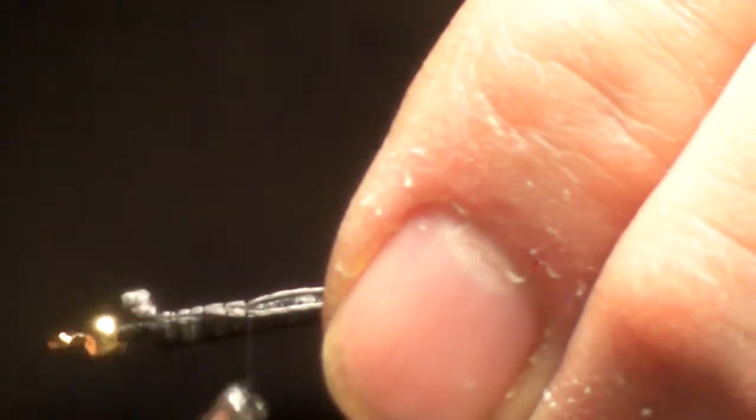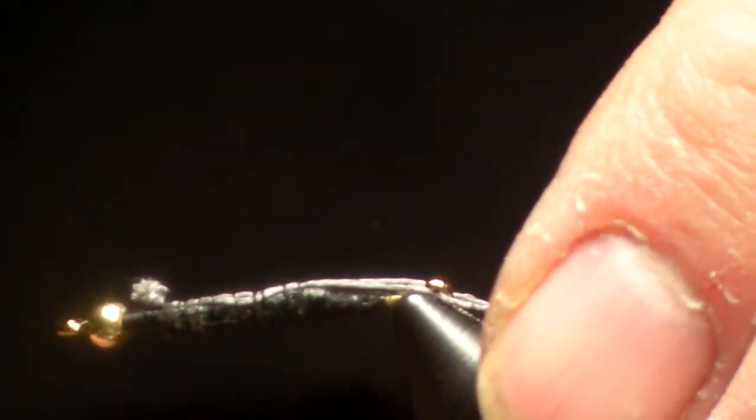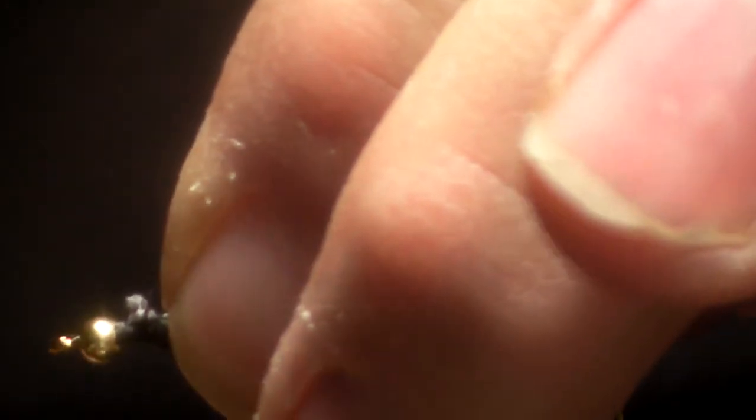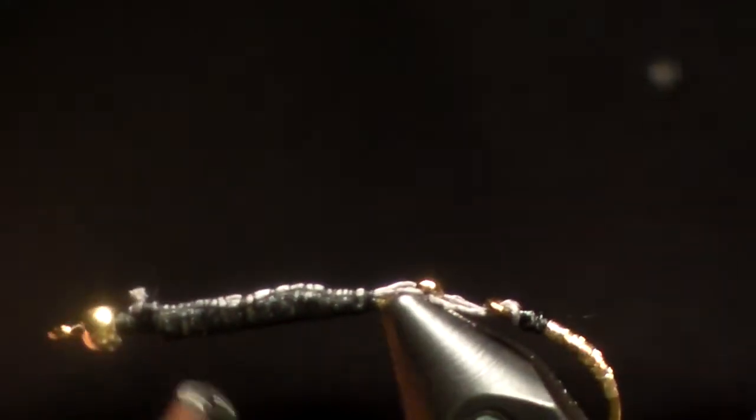So now if I tie right over that knot that I created, there's no possible way for that to pull out. If you want, you can go ahead and put some Loctite on it again. So let's just run up the shank, we'll cover over the knot now. This fly doesn't - you don't have to worry about that knot being there. Just cover over the knot and go to the back.